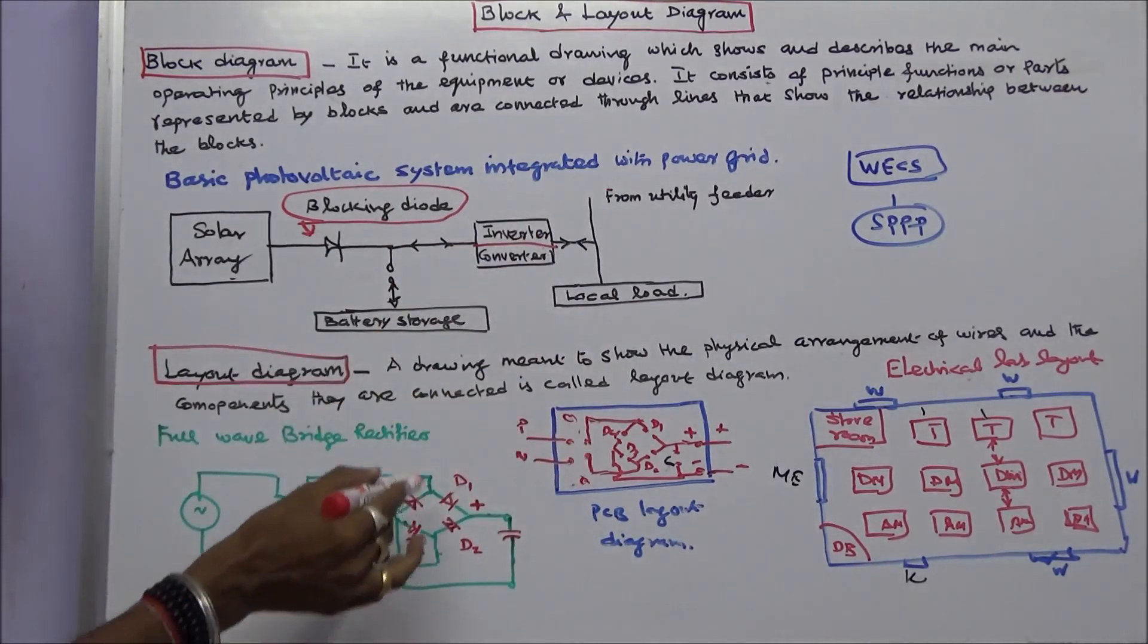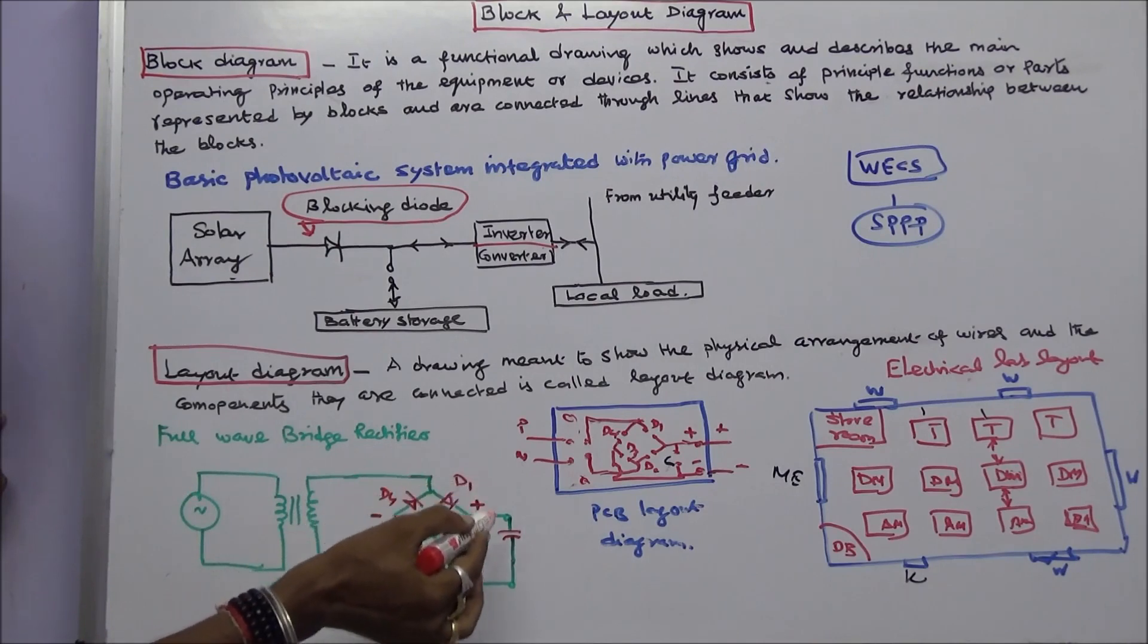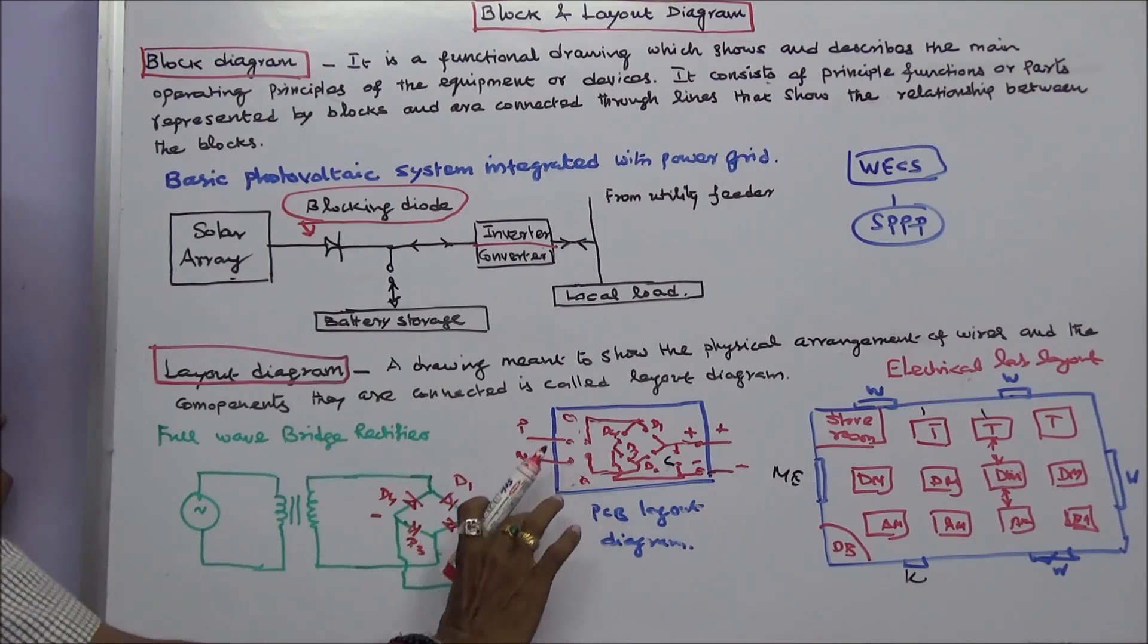So this is a full wave bridge rectifier. It is a transformer, four diodes, one capacitor. This is the output. I take the output here.